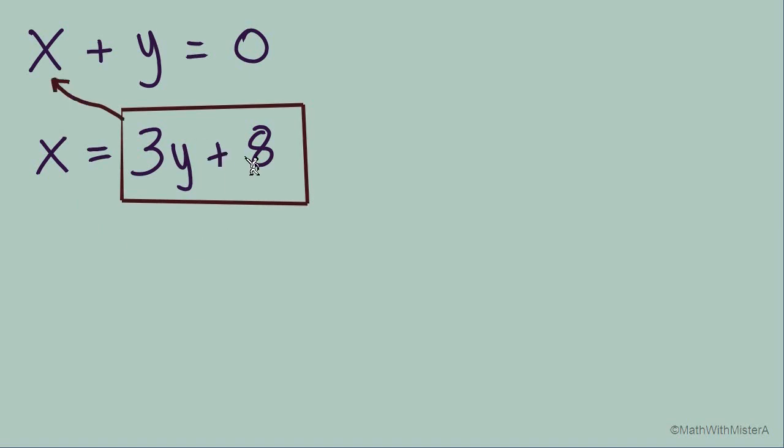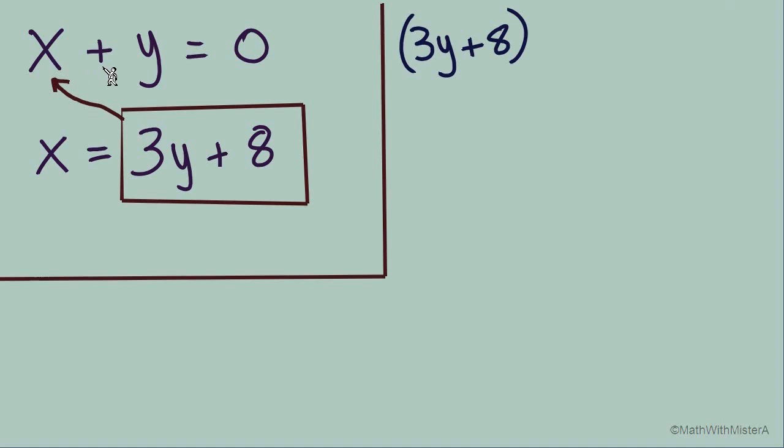So let's clear some space. We'll put the 3y plus 8 right in place of that x. We're combining these two equations. So starting with the rewrite, in this case our substituting is the first term. It's actually the first part of this equation, so 3y plus 8, it's a habit so I still have it in parentheses. How does the rest of the equation go? It goes plus y equals 0.